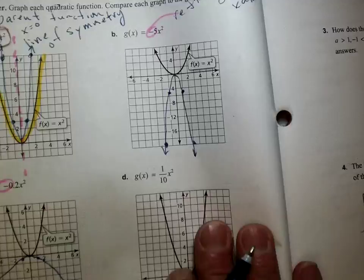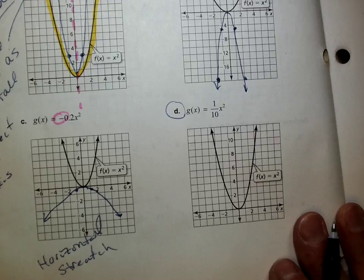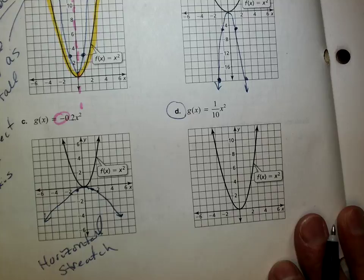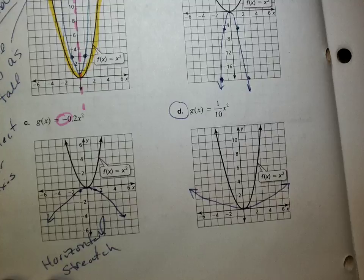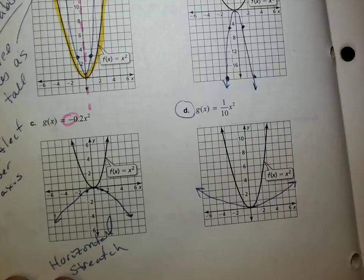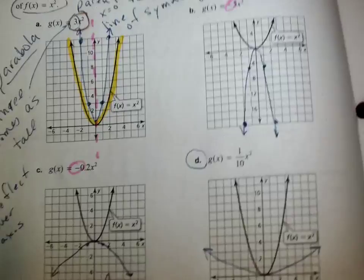Now what about D? We don't need to do it, but what do you know about D? It's going to be a tenth as tall, so it's going to be a lot wider. Either you could call it a horizontal stretch by 10, or you could call it a squish.